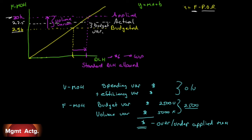One last thing: if we over-apply, that is favorable, because our actual costs came in lower than the amount applied. If we under-apply, that is unfavorable, because more cost remains to be applied. How do we keep it straight? U, U — under starts with a U, and unfavorable starts with a U.